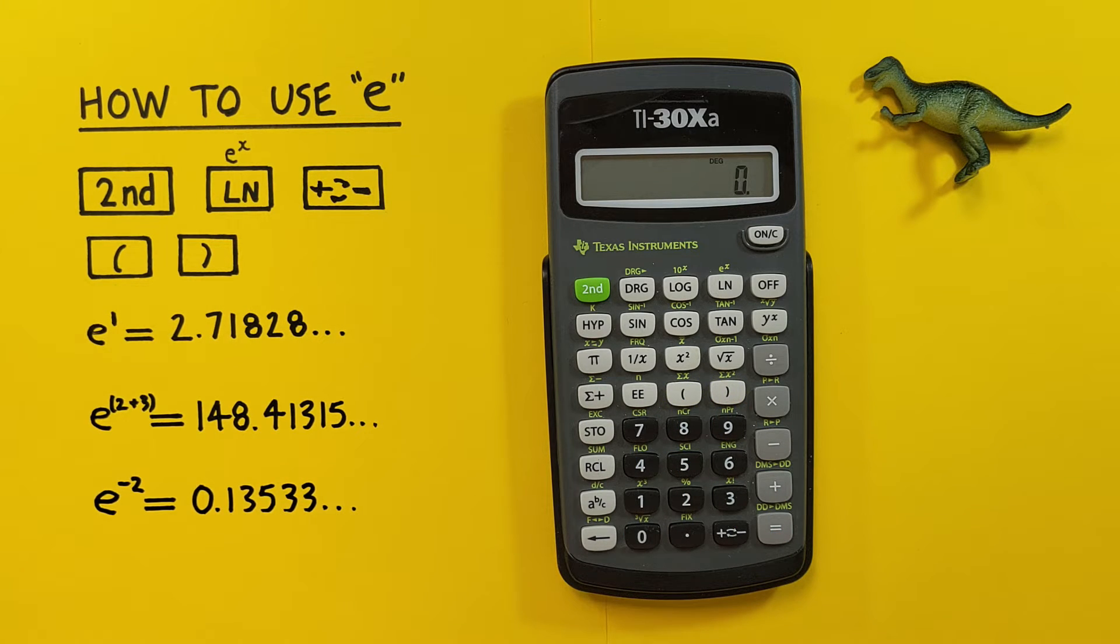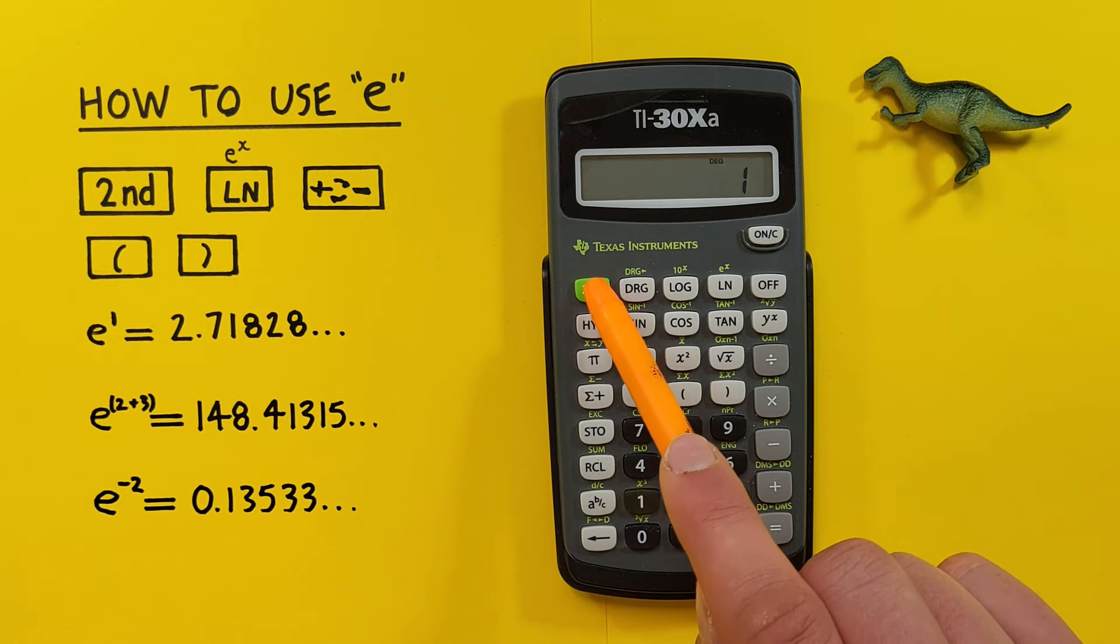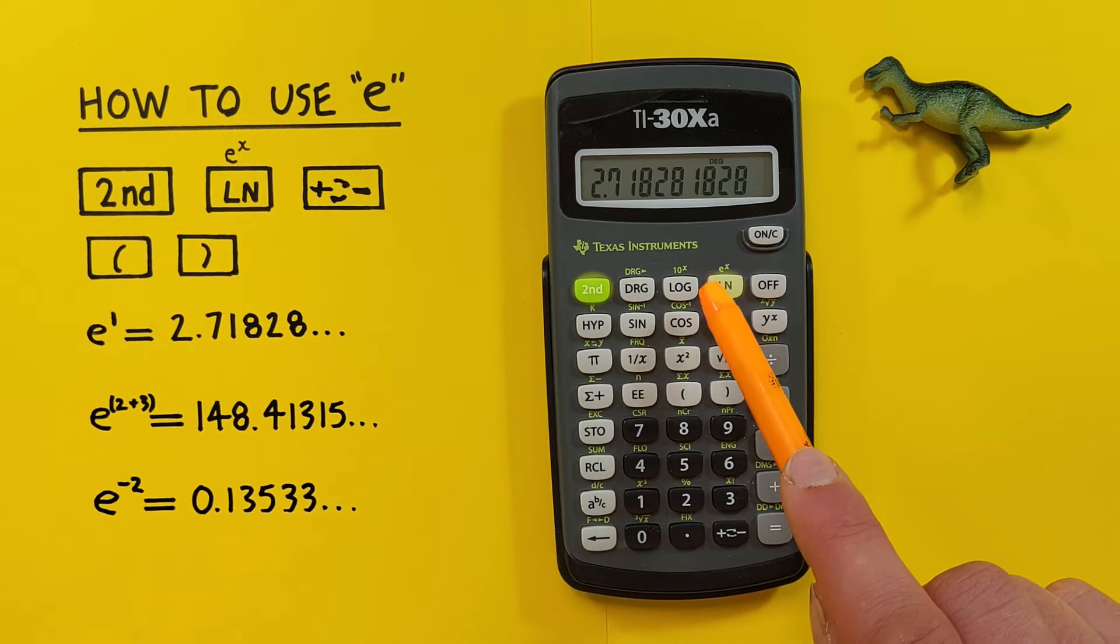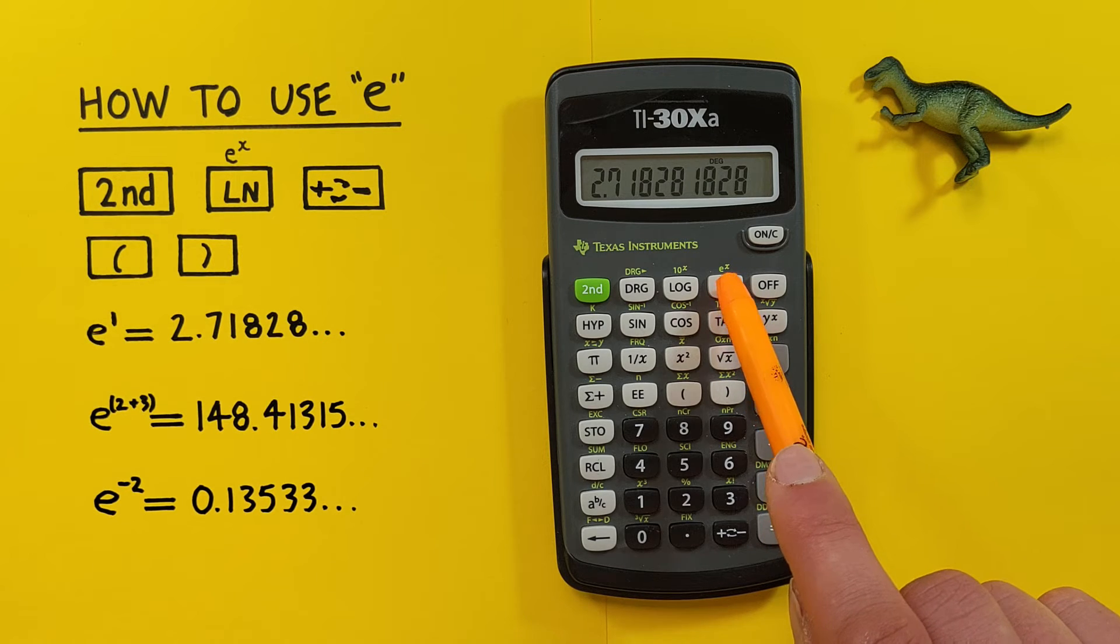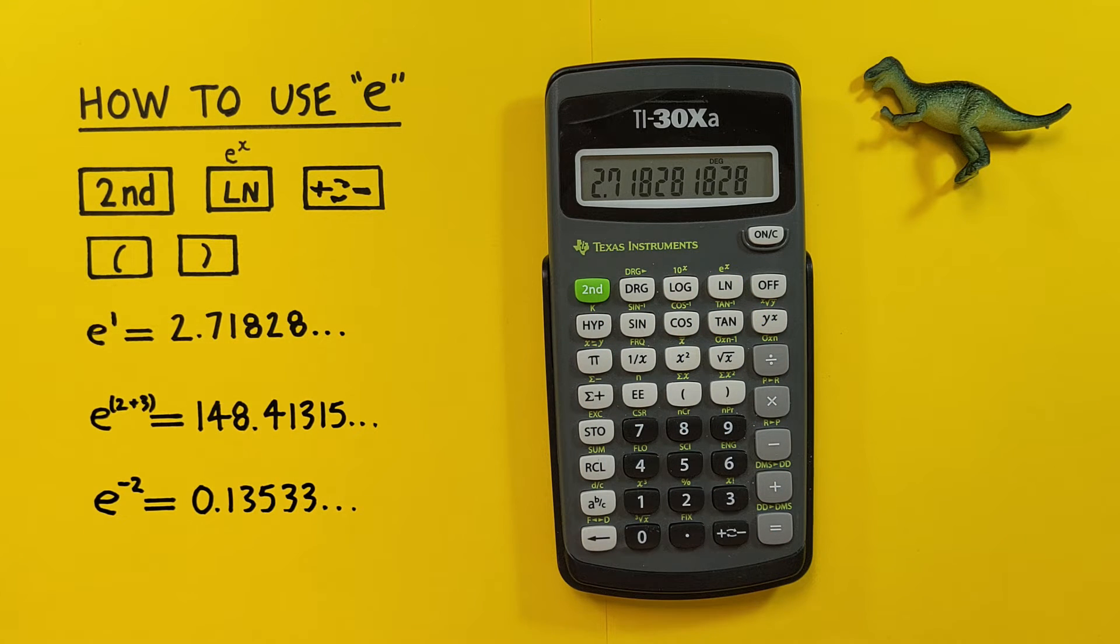If we just want to get the value of e, what we have to do is enter e to the power of 1. To do this we start by entering our exponent or power, so in this case 1, and then press second ln with the second function of e^x, and we see we get a result of 2.71828 etc, or e.